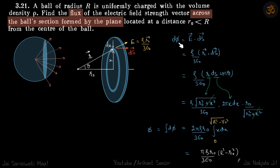Let's write the flux now. dΦ is E dot ds. I can write E as rho r vector by 3 epsilon. So this becomes rho by 3 epsilon r dot ds.